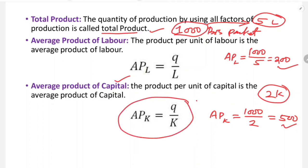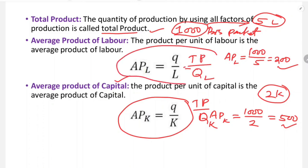The average product of capital is equal to total product divided by quantity of capital. The average product of labor is equal to total product divided by quantity of labor. So: APL = TP / QL, and APC = TP / QK.